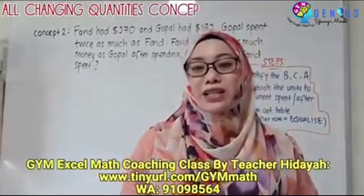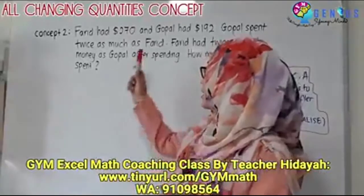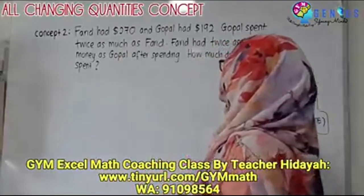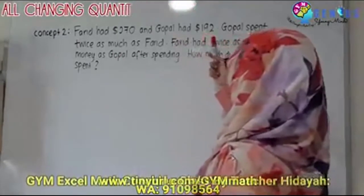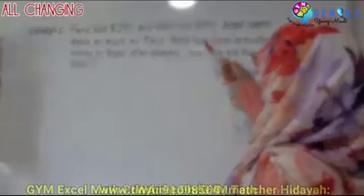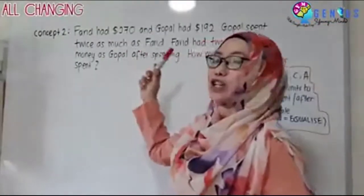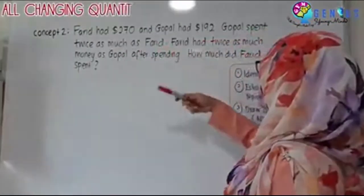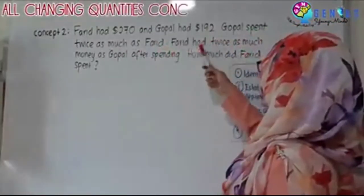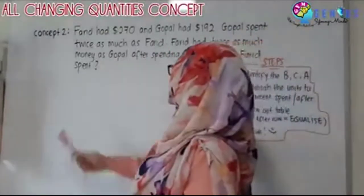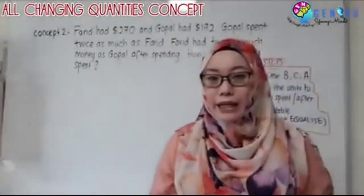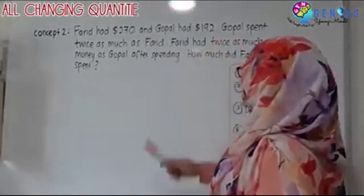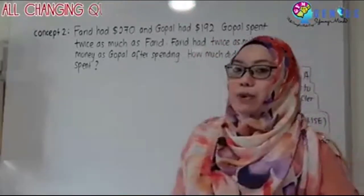Let's try out this question. Let's read first. Farid had $270 and Gopal had $192. Gopal spent twice as much as Farid. Farid had twice as much money as Gopal after spending. How much did Farid spend?